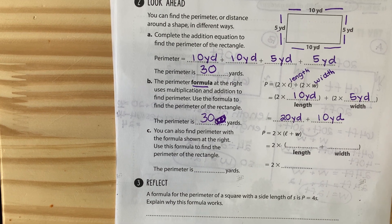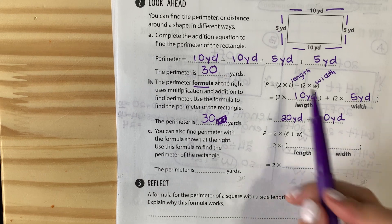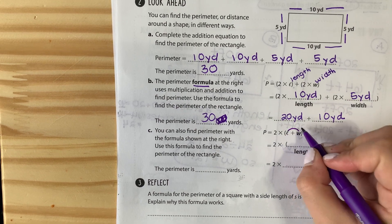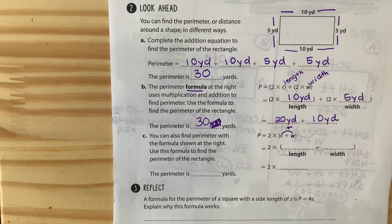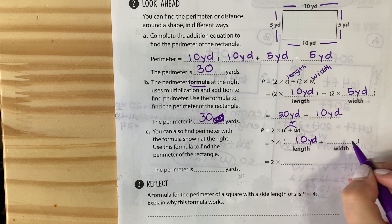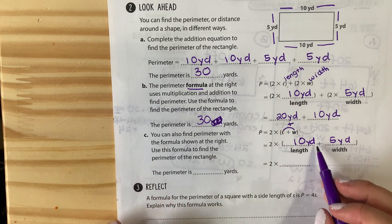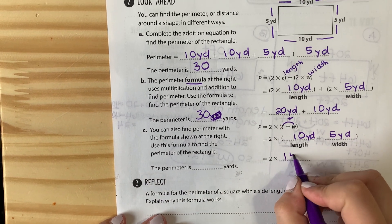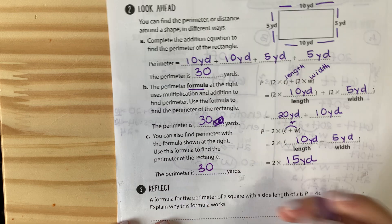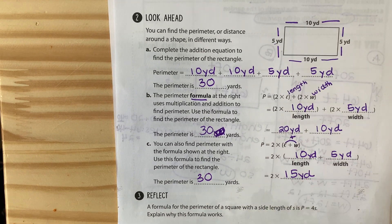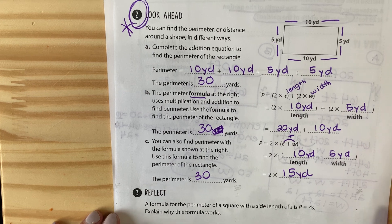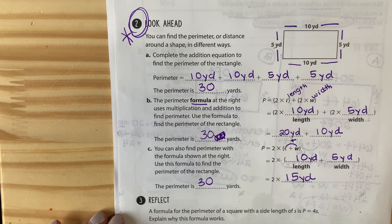For letter C, you can also find perimeter with a different formula: P = 2 × (L + W). Instead of doing 2 times length plus 2 times width, you add your length and width first. So 2 times the quantity 10 plus 5 — we know 10 plus 5 is 15, so that's 2 times 15. And 15 plus 15 is 30. We get 30 yards again. Circle or star number 2, because these are three different ways to solve perimeter problems.